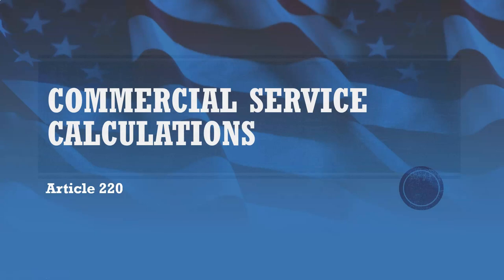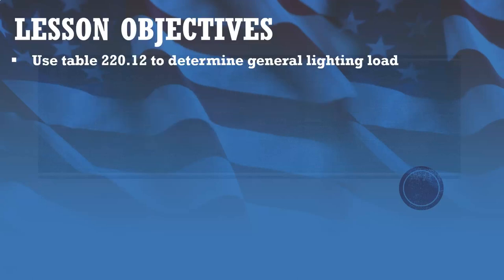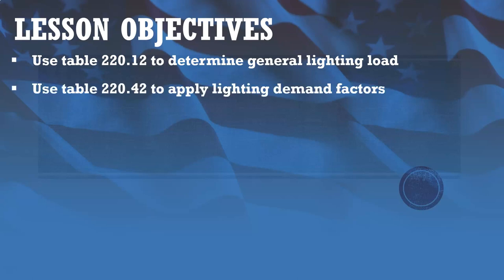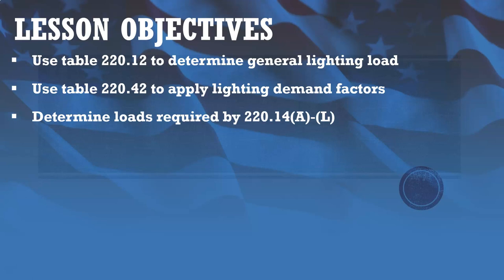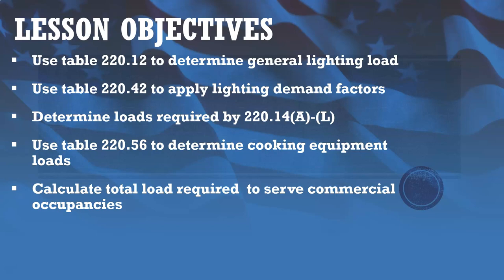This is going to be our second and final lecture of Module 7. In this lecture, we're going to be going over commercial service calculations as they apply to Article 220. Our objectives for this lesson: we're going to use Table 220.12 to determine general lighting load, use Table 220.42 to apply lighting demand factors, determine loads required by 220.14 A through L, use Table 220.56 to determine cooking equipment loads, and calculate total load required to serve commercial occupancies.